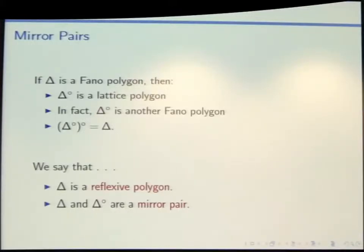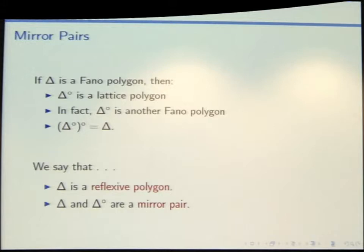Just a little bit of vocabulary. We've got this duality procedure — it's almost like a reflection in a mirror. So we say that our starting polygon and its polar dual are reflexive polygons. And sometimes it's nice to also say that they're a mirror pair, because we like the word mirror.